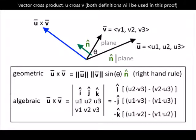Here we define the cross product u cross v, shown in blue, of the two vectors u and v. The cross product vector is perpendicular to the plane formed by vector u and vector v. In the geometric definition, u cross v equals the magnitude of vector u times the magnitude of vector v times the sine of the angle theta between vectors u and v.